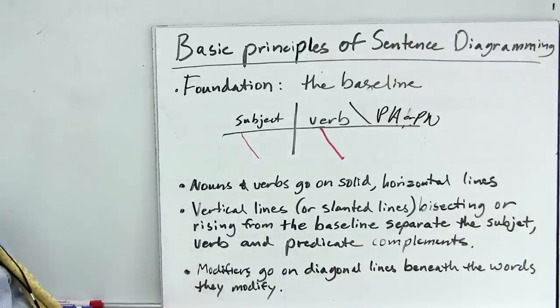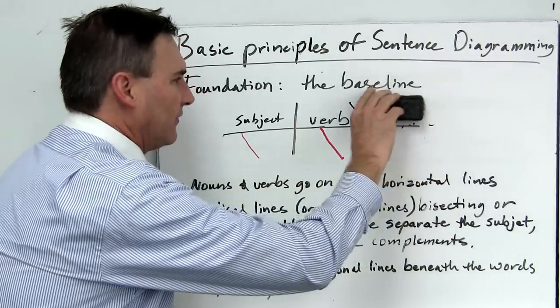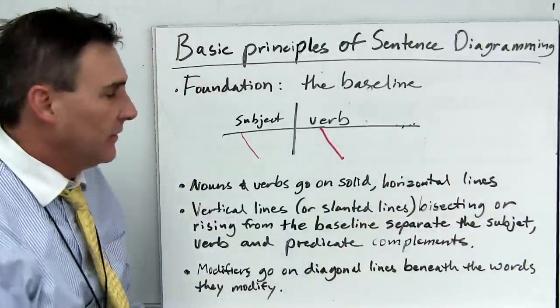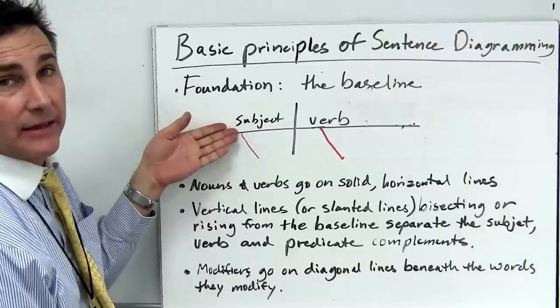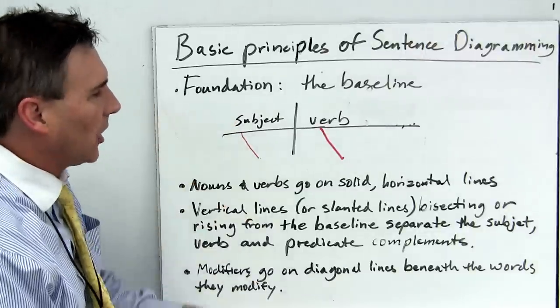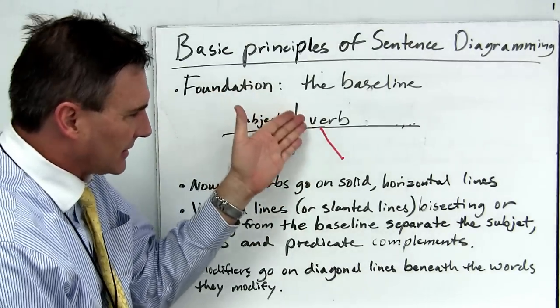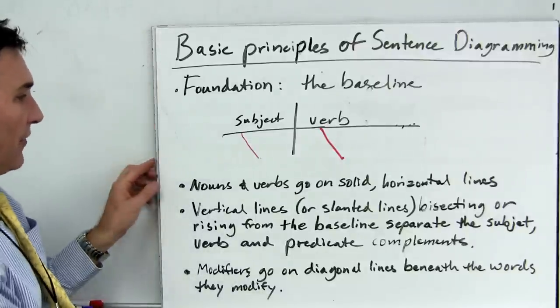But our modifiers, and this is the key point here, modifiers go beneath the word they modify. Things like adjectives describing nouns go on a diagonal line beneath the word they modify. Same thing with adverbs on a diagonal line beneath the word they modify. So those are the basics.